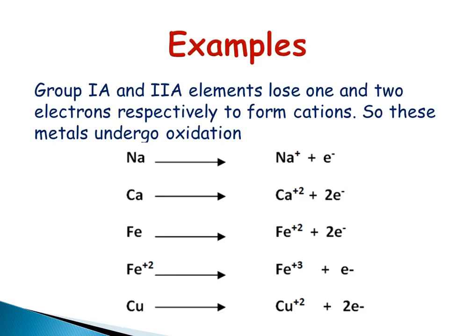Examples: Group 1A and 2A elements lose one and two electrons respectively to form cations, so these metals undergo oxidation. Sodium changes into sodium cation by losing one electron. Calcium changes into calcium cation by losing two electrons. Iron changes into iron cation by losing two electrons and is converted into Fe+3 by losing one more electron. Copper changes into copper ion by losing two electrons.